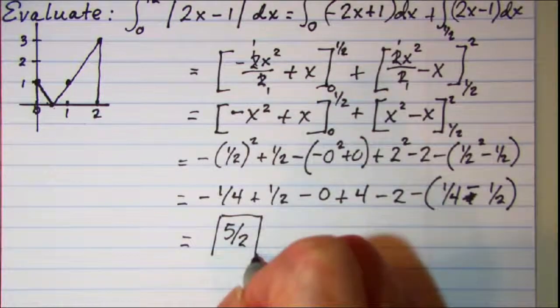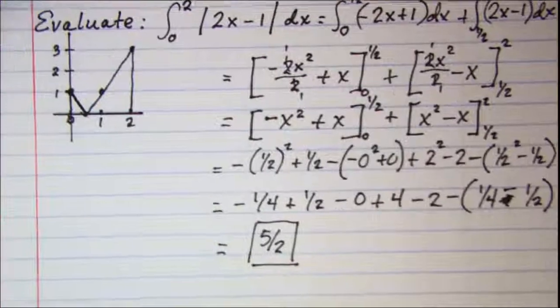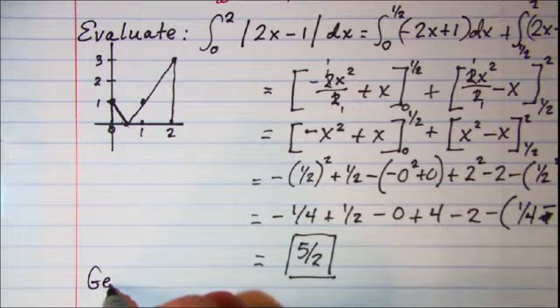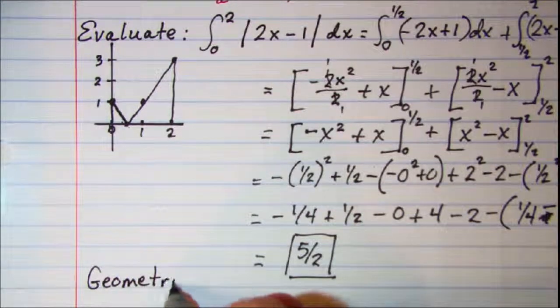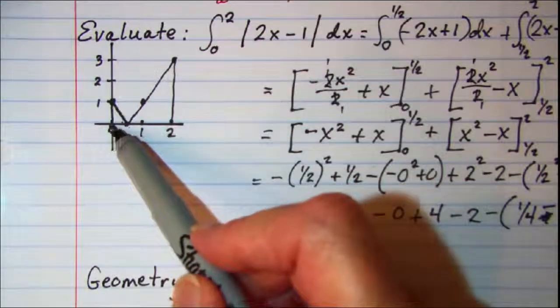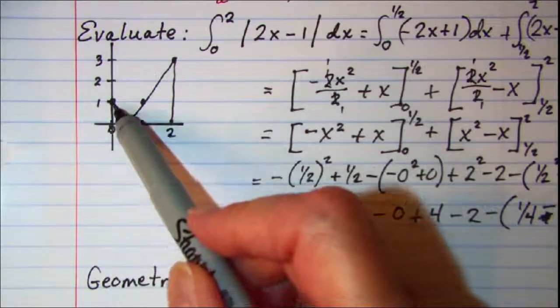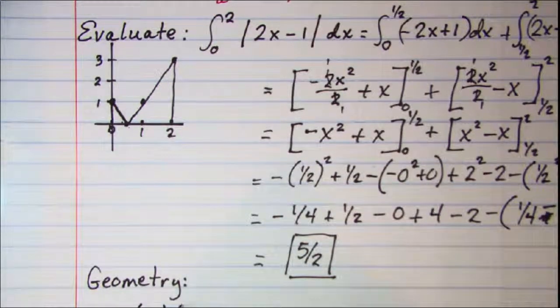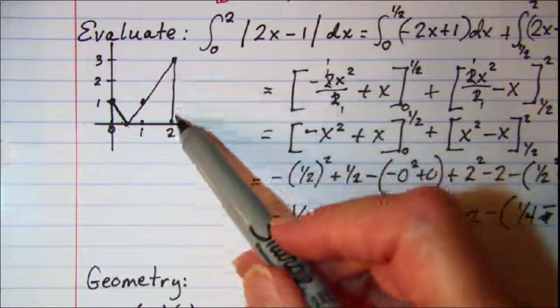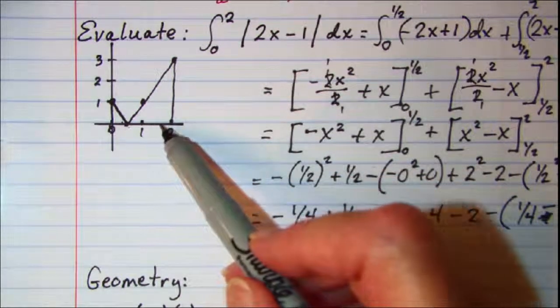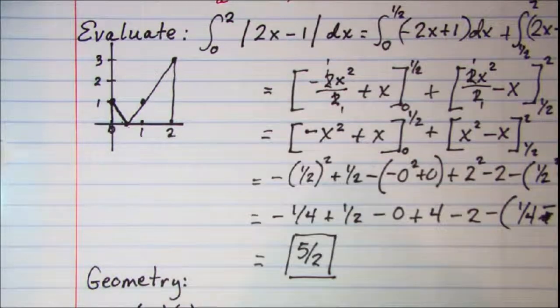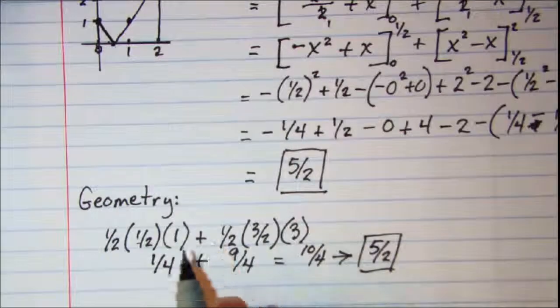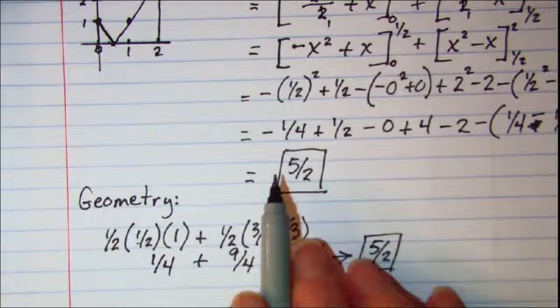Now notice we could use geometry formulas on here just to check and make sure we have the right answer. This is a triangle with a base of 1/2 and a height of 1, so the area of that triangle is 1/2 the base times the height. And then this triangle has a base of 1 and 1/2, which is 3/2, so we have 1/2 the base times the height, which is 5/2. Checking our math using geometry formulas, we get the same answer.